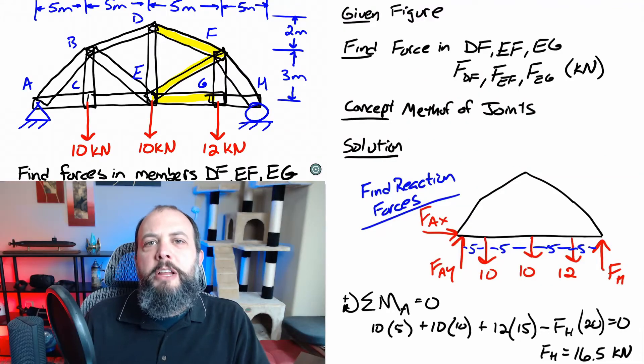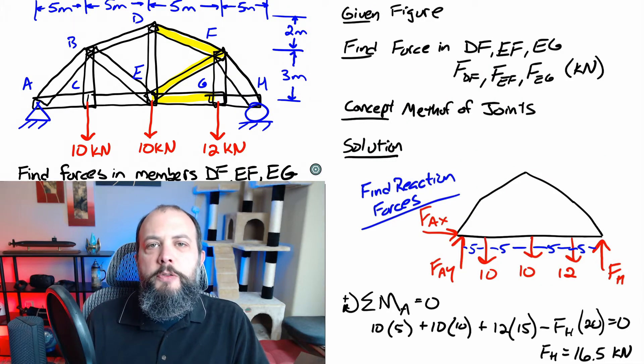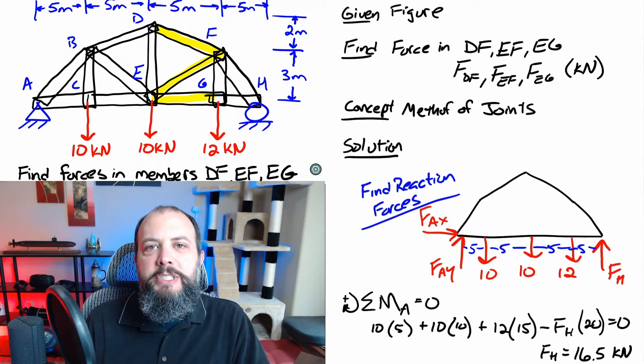So the first part of the solution is going to be to find the reaction forces. This is going to be used for both method of joints and method of sections.